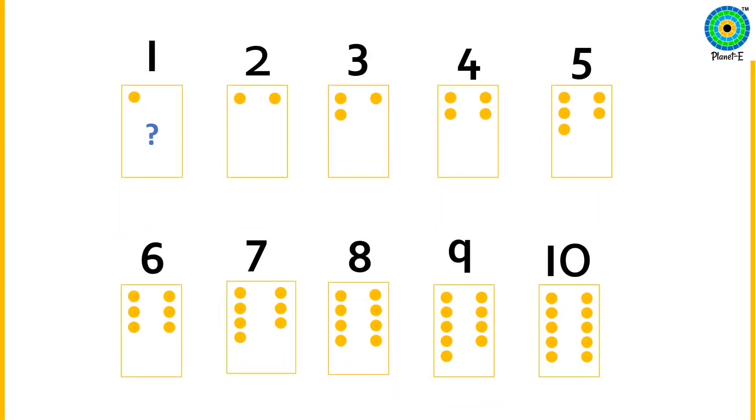Let's begin from one. One dot, it has no friend. Therefore, it's an odd number. One and two. It's a pair. Number two is an even number.